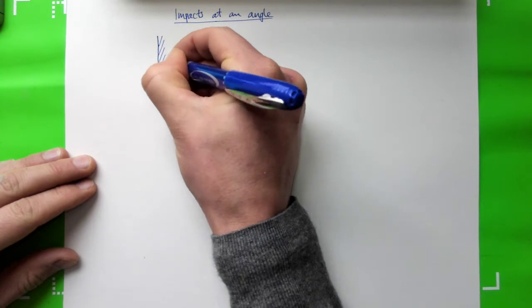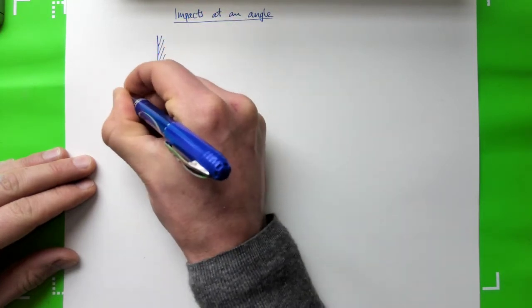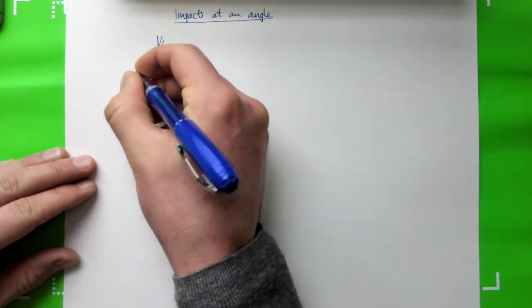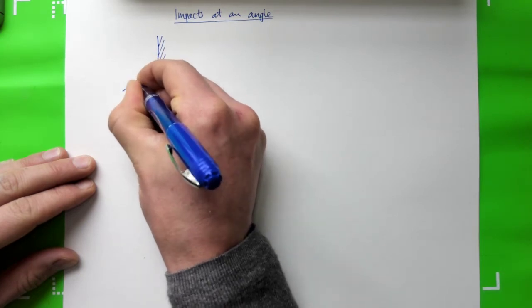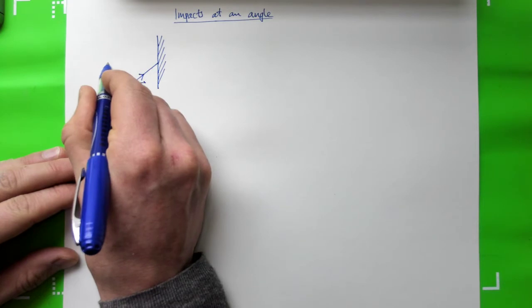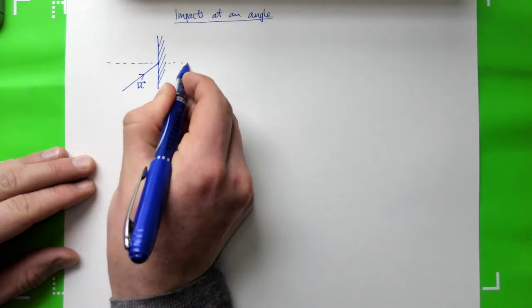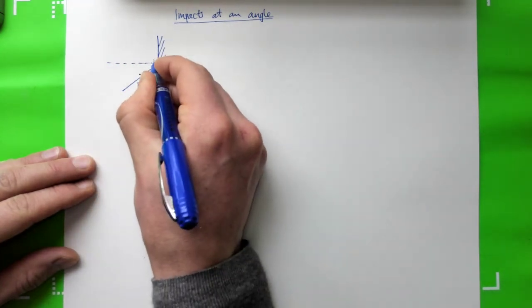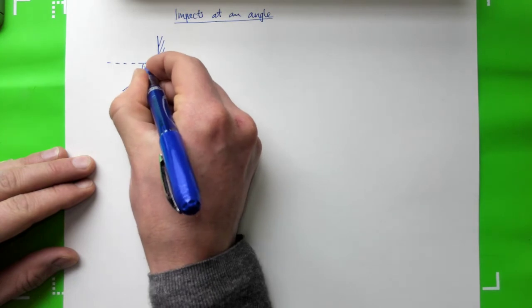So here's our solid wall, here's our initial velocity, let's call it U, and it's a vector, and let's say it comes in at a certain angle. This would be the normal, 90 degrees, so we'll call this angle theta.